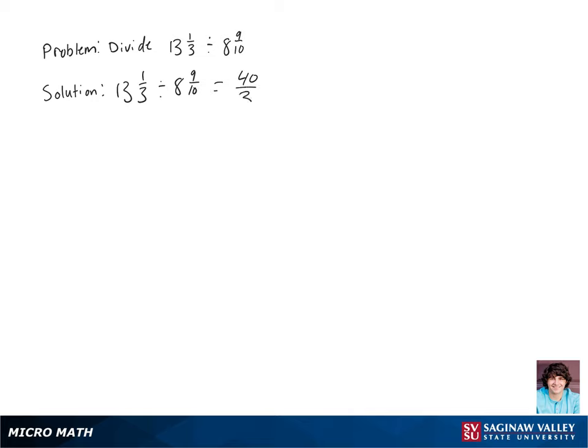13 and 1 third can be rewritten as 40 over 3, and 8 and 9 tenths can be rewritten as 89 over 10.